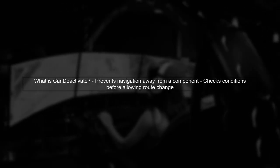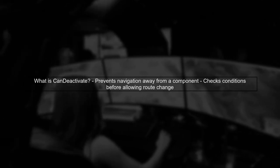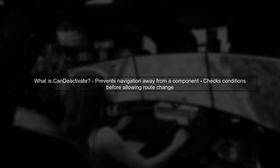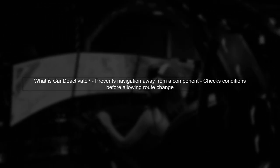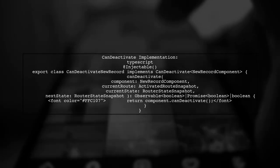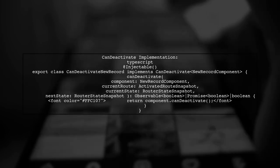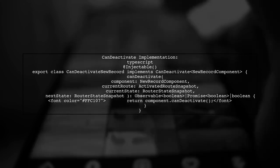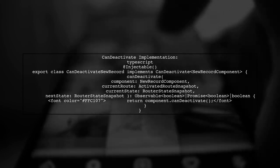Let's begin by understanding the CanDeactivate guard in Angular. This guard is used to prevent users from navigating away from a component if certain conditions are not met. In your implementation, the CanDeactivate guard always returns false, which means navigation should be blocked. This is done by calling the CanDeactivate method in your new record component.